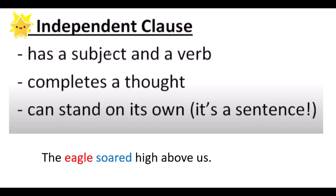We could expand this sentence and have a subordinate conjunction — for example, 'while the eagle soared high above us, the falcons swooped down to earth.' That second part, including 'while,' would be a dependent clause because it can't stand on its own. But really we don't need to look at that today. You just need to be able to identify an independent clause.